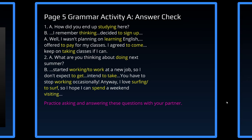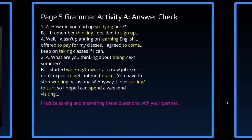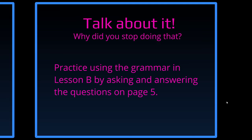What are you thinking about doing? Thinking about — verb plus preposition — use the -ing form. I would like you to practice these expressions with your partner: practice asking and answering these questions. 'Why did you stop doing that?' Practice using the grammar in Lesson B by asking and answering the questions on page 5. Again, anytime you see the pink letters, these are things you can do during your KakaoTalk with your partner. Open up the presentation, go through it together, and do these speaking activities. You can also do the ones from the book.